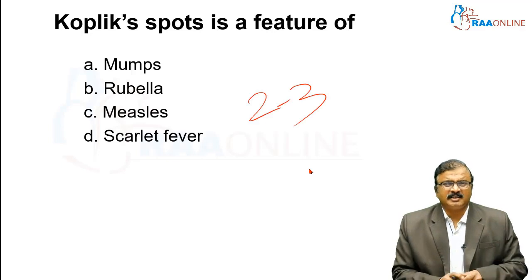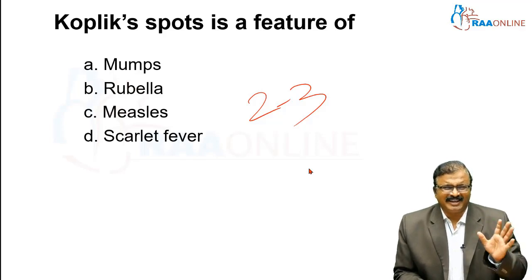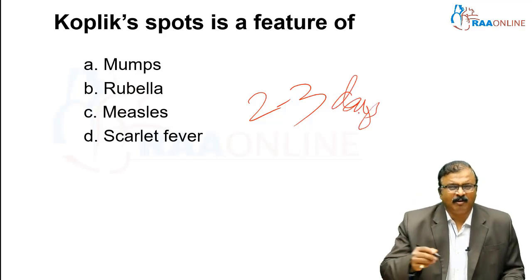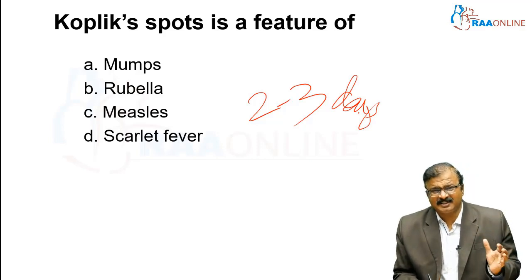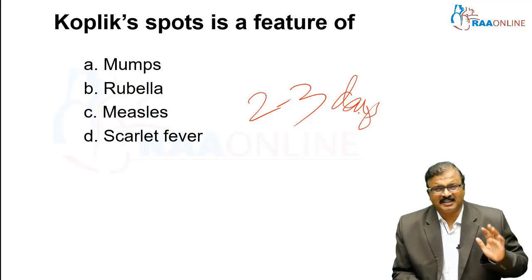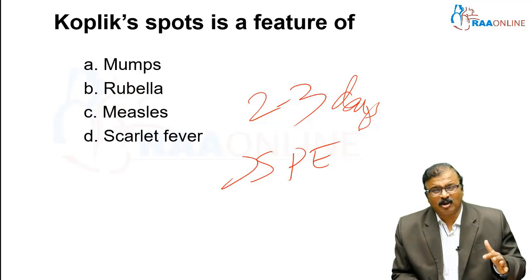The first question is: Koplik spots is a feature of? The answer is measles. Koplik spots is an enanthem seen as an erythematous lesion inside the buccal mucosa, usually two to three days after onset of symptoms. Measles is a self-limiting disease, mostly without complications. The dreaded complication is SSPE, which should not occur — if it occurs, it has permanent neurological sequelae.